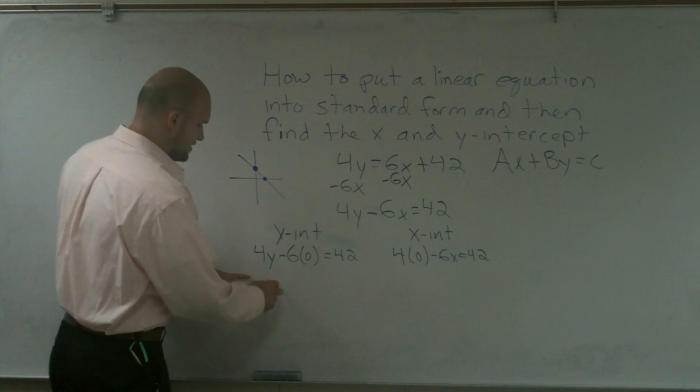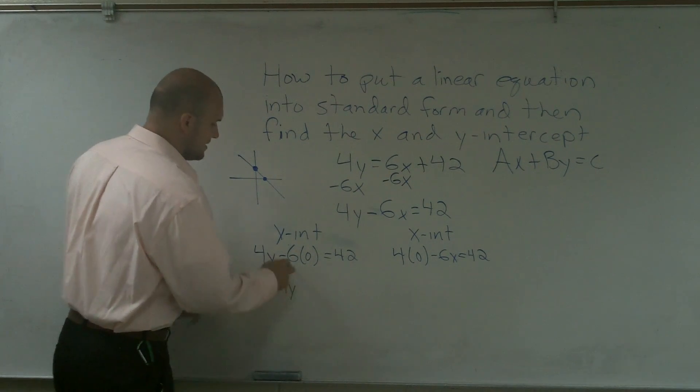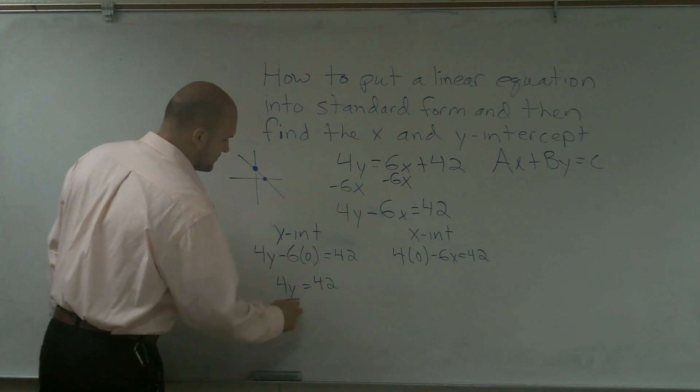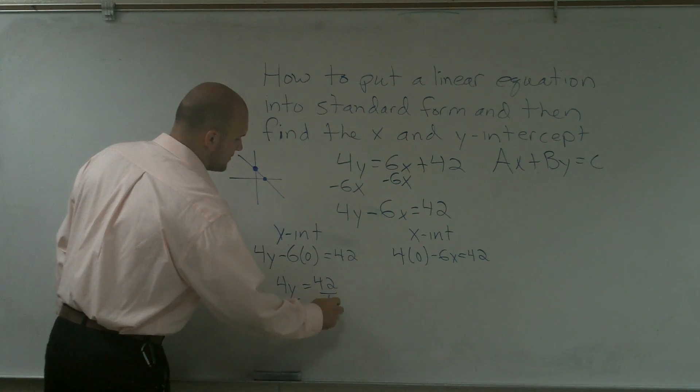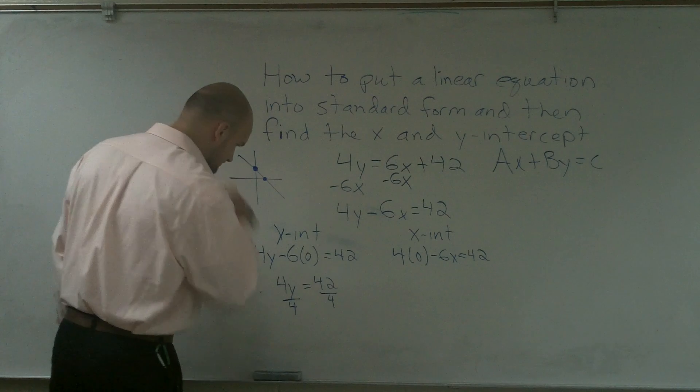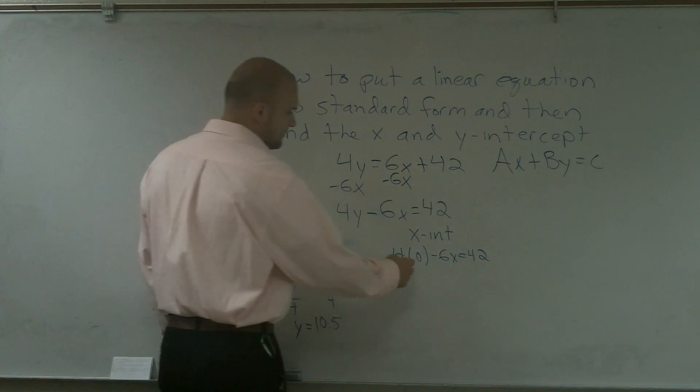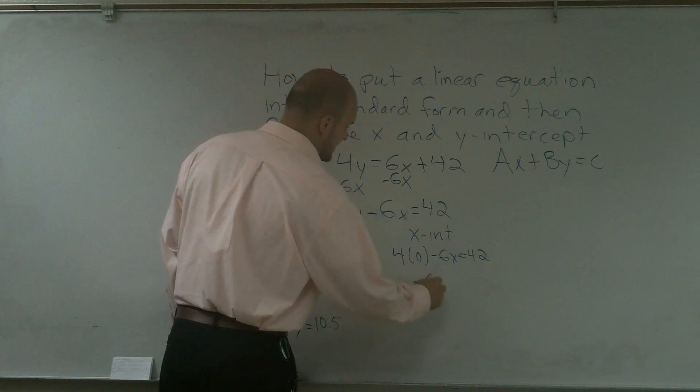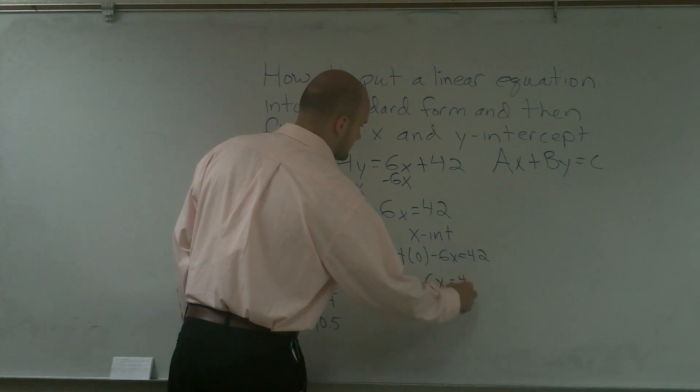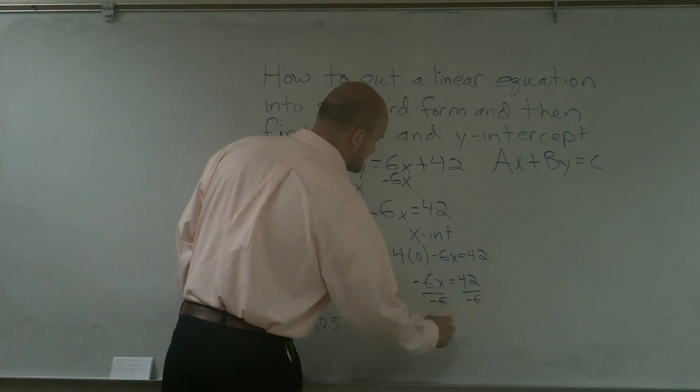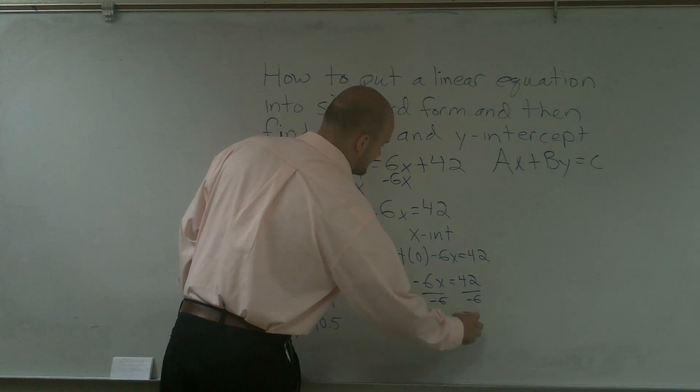Now all you have to do is just finish off and do your algebra. So 4y minus 0 equals 42, divide by 4, y equals 10.5. Here, 4 times 0 is 0, negative 6x equals 42, divide by negative 6, x equals negative 7.